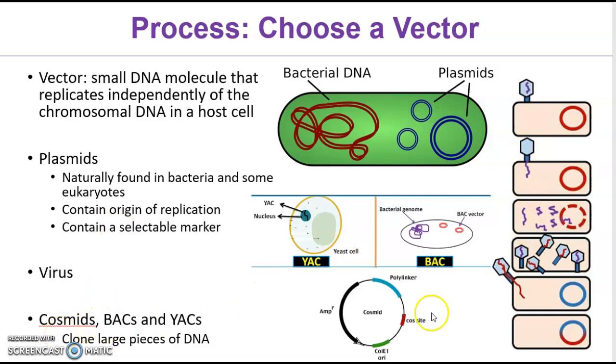Viruses can be used to insert foreign DNA into bacteria. Or there are some other things called cosmids, yeast artificial chromosomes, or bacterial artificial chromosomes. These tend to be used to clone large pieces of DNA and to make whole genomic libraries. So isolate your DNA and then choose a vector.